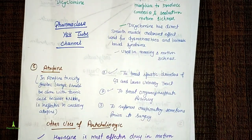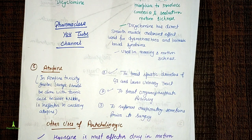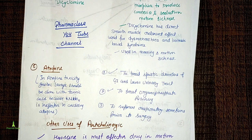Thank you. Your anticholinergic drugs are complete, along with cholinergic agonist drugs — your entire parasympathomimetic and parasympatholytic drugs are complete. Next we will cover neuromuscular blockers and sympathomimetic drugs.